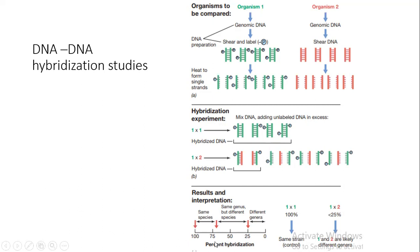Generally, we can determine this with the help of the hybridization percentage. If the hybridization percentage is less than 25%, it suggests that the two genera we are looking at are completely different genera. If the hybridization percentage is more than 25% and less than 75%, it suggests that the two organisms are from the same genus but from different species. If the hybridization percentage is more than 75%, it indicates that they are actually the same species.